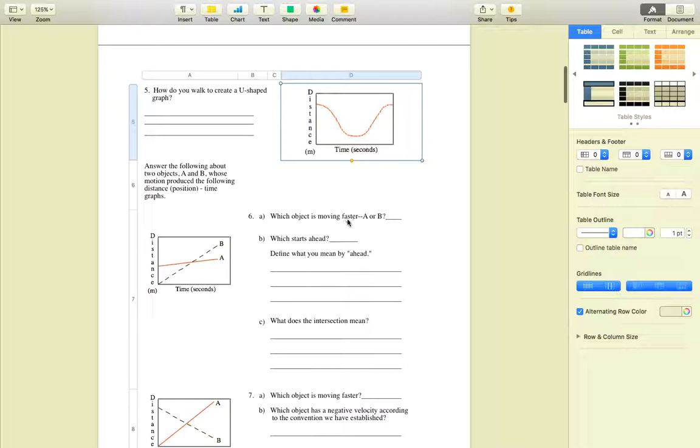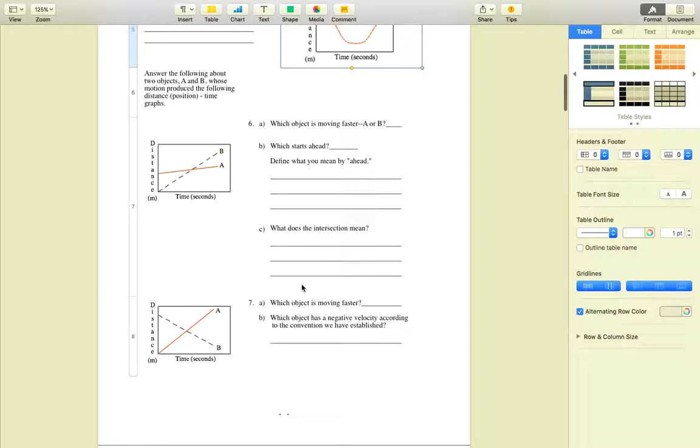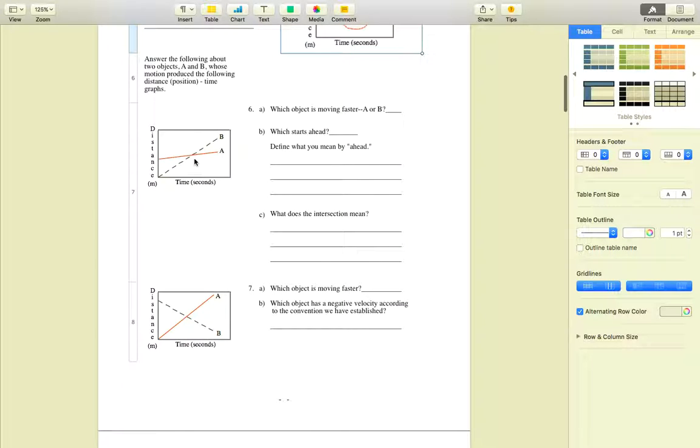In answer to this question, which object is moving faster? That is B. Which starts ahead? It's A, right? A has a head start. The intersection means when B passes A.